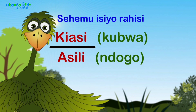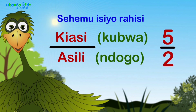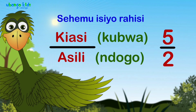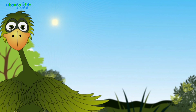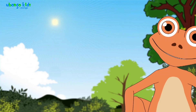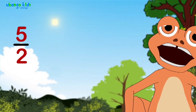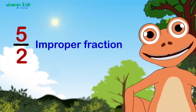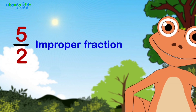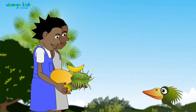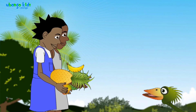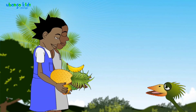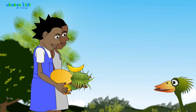Tano ya mbili. Mneelewa? Ndiyo. That's five halves. We call that an improper fraction. Ndiyo — nisemu isio rahisi.